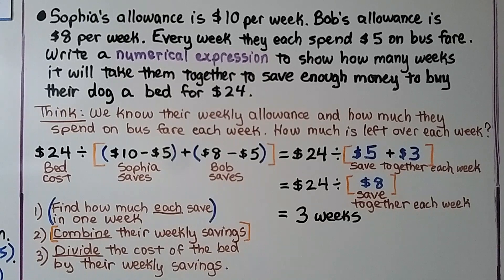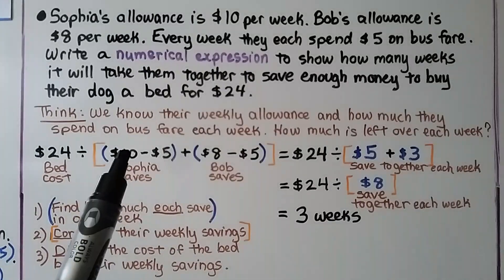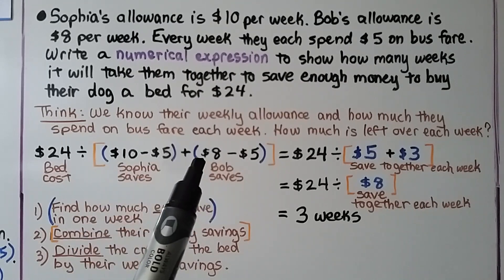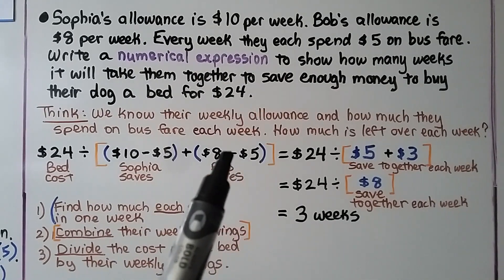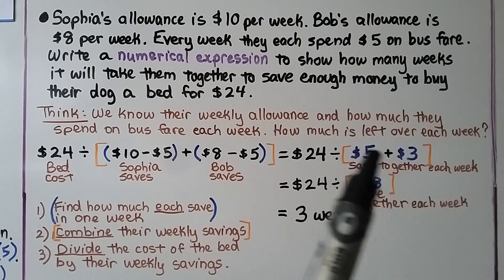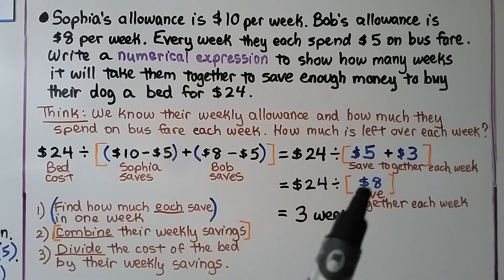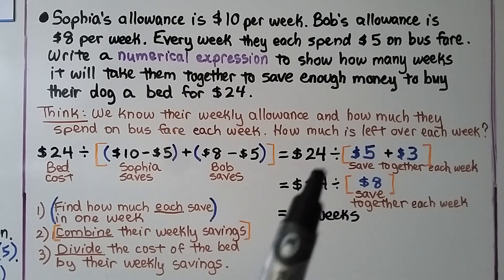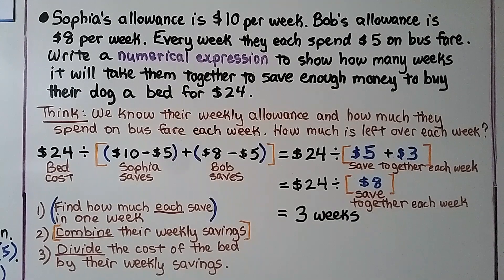Sophia's allowance is $10 per week and Bob's allowance is $8 per week. Every week, they each spend $5 on bus fare. We need to write a numerical expression to show how many weeks it will take them together to save enough to buy their dog a bed for $24. Sophia has $10 minus $5, leaving $5 to save. Bob has $8 minus $5, leaving $3. Together they save $8 per week. Dividing $24 by $8 shows it will take three weeks.